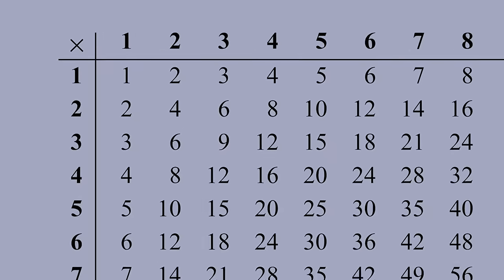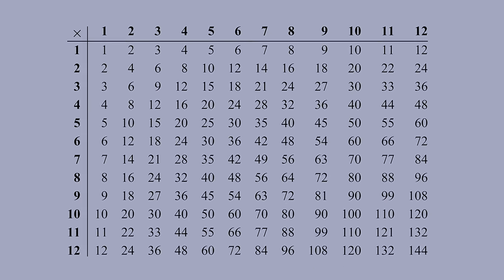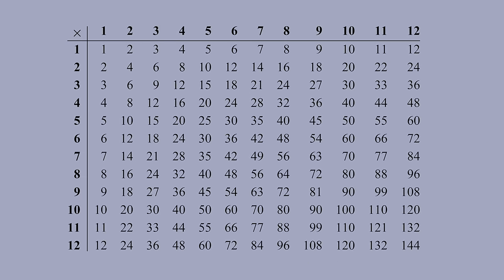When you learned arithmetic, you probably had to memorize a multiplication table. This table shows you how to multiply any two small numbers, usually the integers 1 through 12.